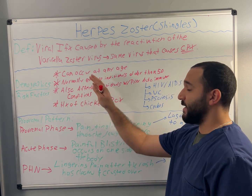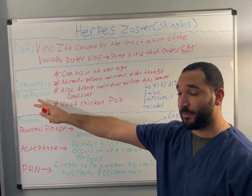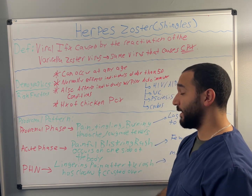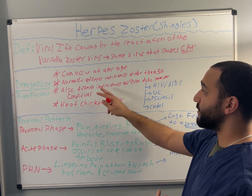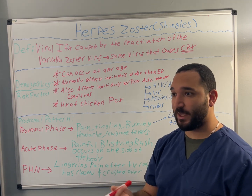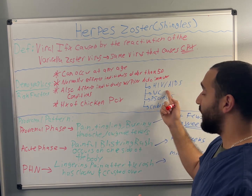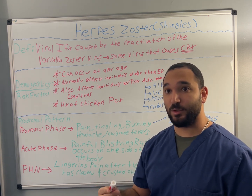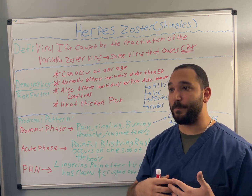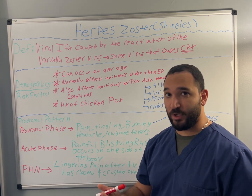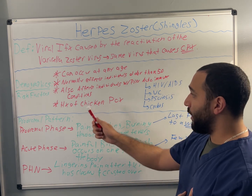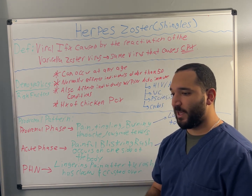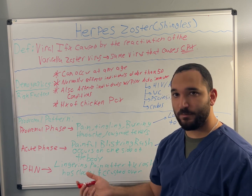In regards to demographics, herpes zoster can occur at any age. The risk factors associated with it — it normally affects individuals older than 50, but children can also get shingles. It also affects individuals with prior autoimmune conditions, for example patients who have HIV, AIDS, ulcerative colitis, or Crohn's disease. Those individuals are more prone to getting shingles due to the inflammation and stress on the body. A big risk factor is a history of chickenpox — if an individual had chickenpox when they were younger, they have a higher chance of developing shingles later in life.